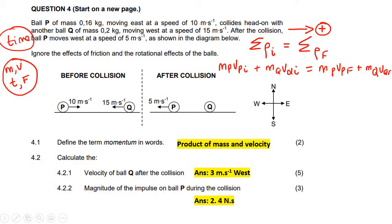We just fill everything in now. The mass of P is 0.16. Its initial velocity was 10, going to the right, so I'll keep that as positive. Don't make this a negative just because this is going negative. The mass of Q is 0.2, but its initial velocity is 15 to the left. We chose right as positive, so I say minus 15 over there.